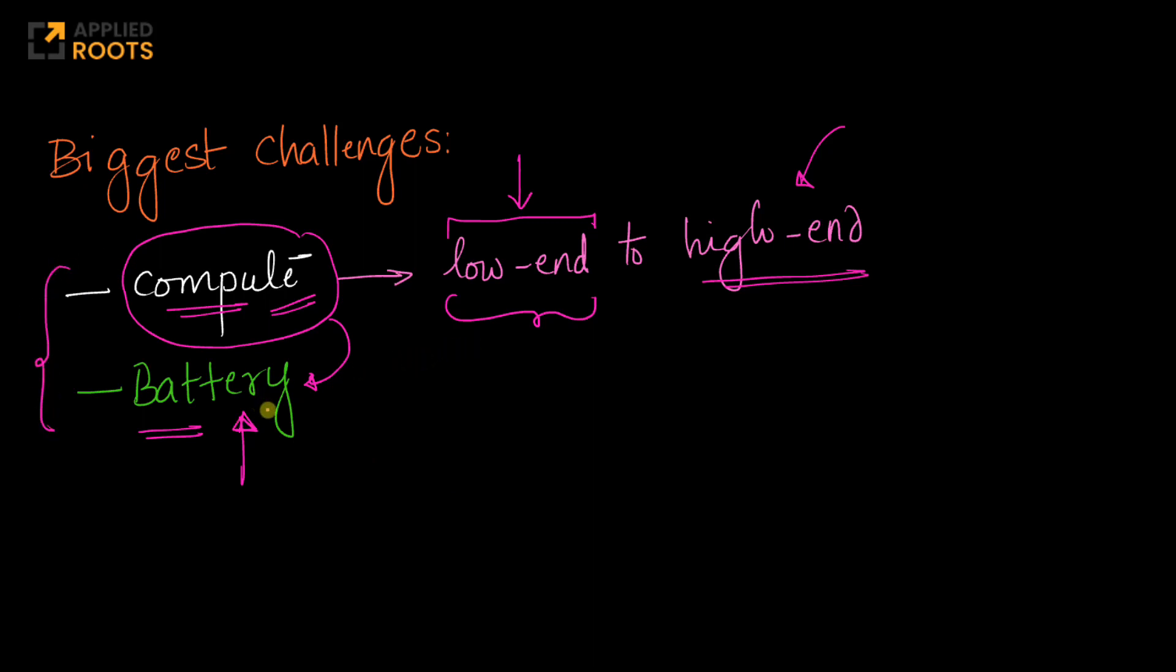Both in terms of battery optimization, compute optimization, heat and heat dissipation, the actual physical engineering, the electronics engineering part that are also important constraints that you have when you have to design on-device machine learning and deep learning solutions.